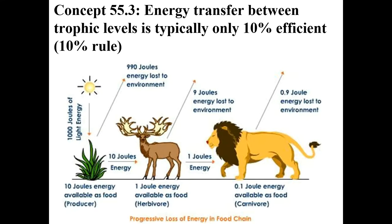We're looking at energy transfer between trophic levels and the 10% rule today. Each energy transformation is about 10% efficient. So if you look at a thousand joules of light energy available, that's going to bring us down to a hundred joules, and then only about 10 joules of energy are available to the primary consumer.